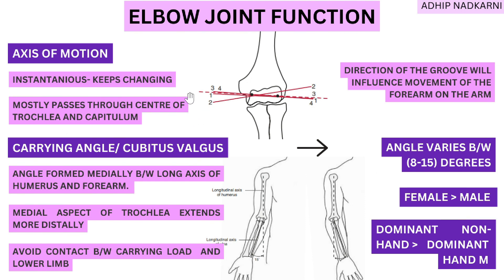To get a basic understanding, the instantaneous axis mostly passes through your center of the trochlea and capitulum. As flexion happens, the axis keeps moving — that's why it's called the instantaneous axis for your elbow joint.